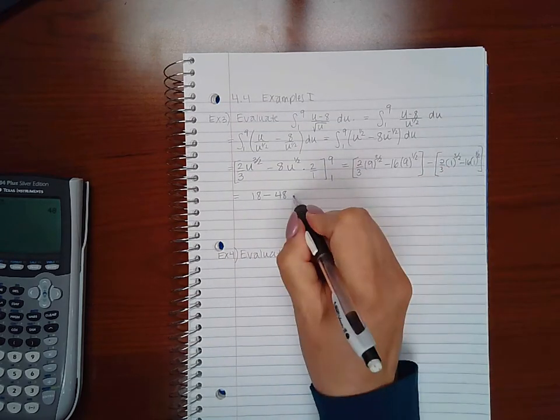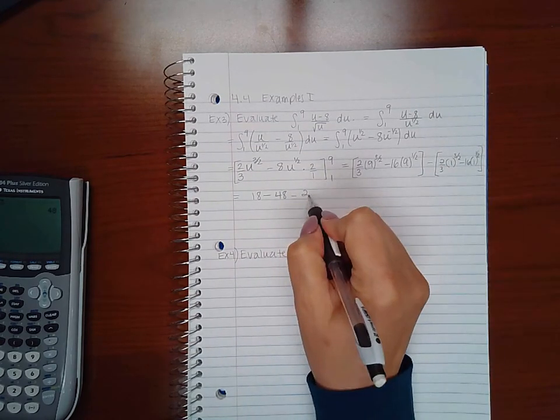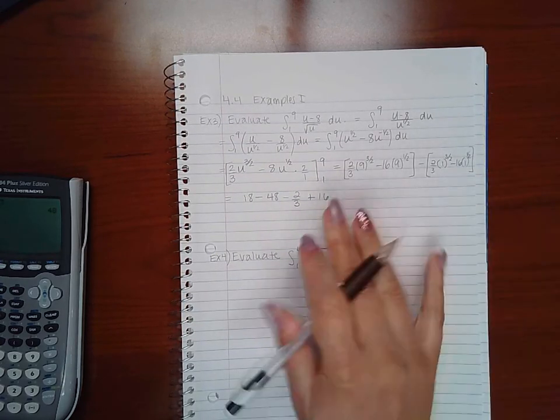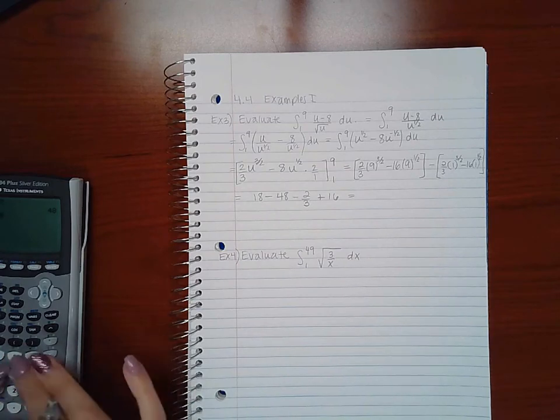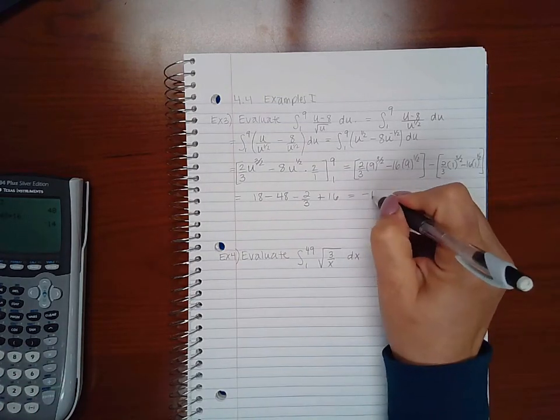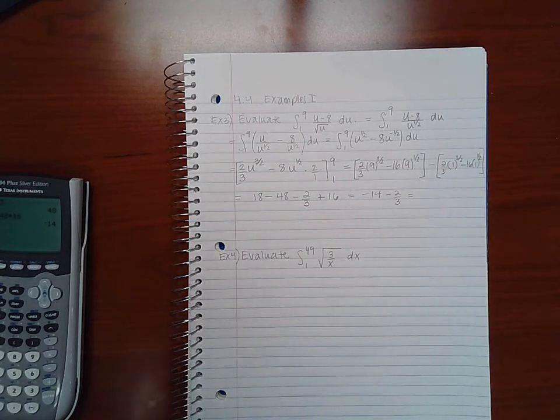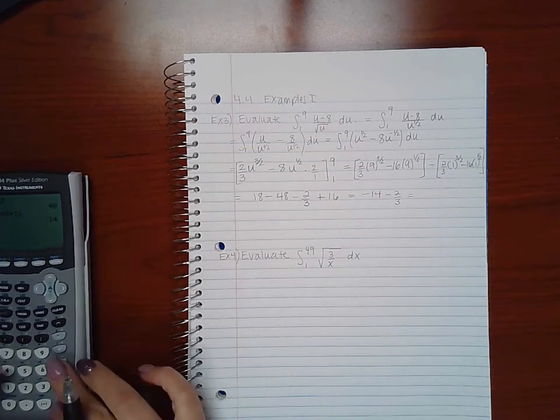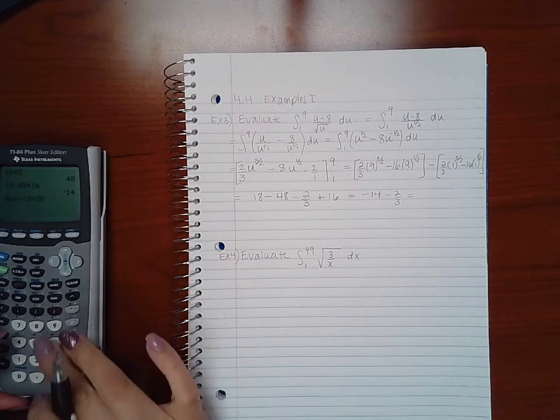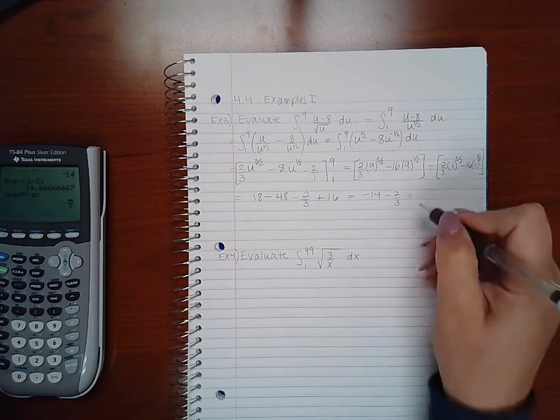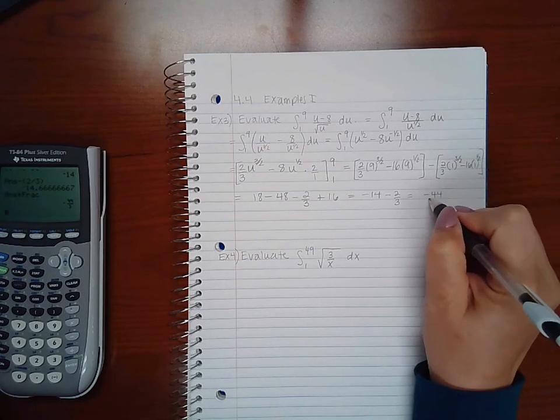If I distribute this minus, this will be negative and I'll have 2 thirds. And if I distribute the negative here, I'll have positive 16. So 18 minus 48 plus 16. I get negative 14 minus 2 thirds. And then we can put it in a fraction. We get negative 44 over 3.